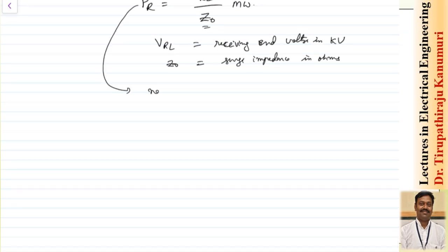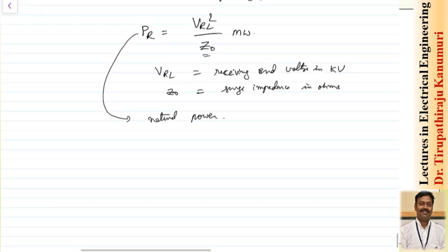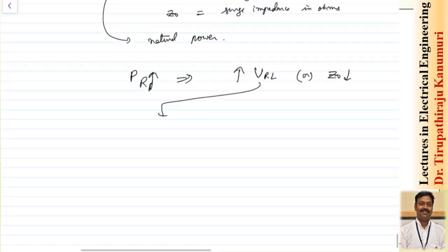SIL is sometimes called natural power — the power that can be transmitted over a lossless transmission line. It can be used to compare loads carried by transmission lines of different voltages. PR is proportional to VRL² and inversely proportional to Z₀. Increasing VRL increases the surge impedance loading, which is why we go for higher and higher voltages in practice to increase power transfer capability.